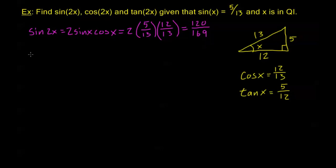Let's look at cosine. We can use any of the formulas - remember we have three different formulas for cosine. I'm going to use cosine squared minus sine squared. My cosine here is 12 thirteenths squared, my sine squared is 5 thirteenths squared.